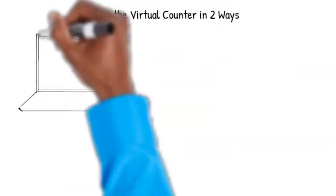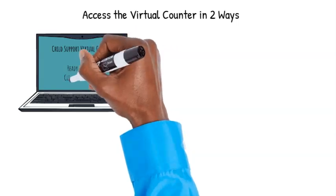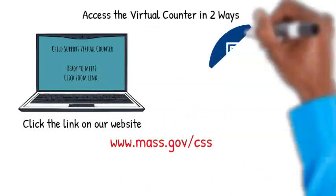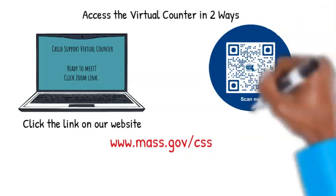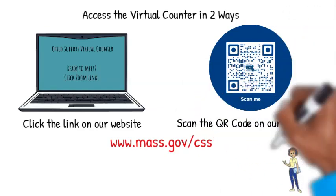To access DOR's virtual counter, you can click on the link provided on our website www.mass.gov/css or scan the QR code provided on our website and at the end of this video.